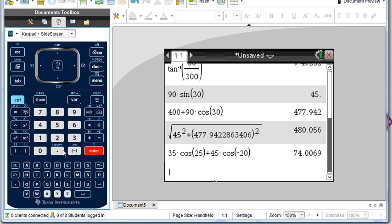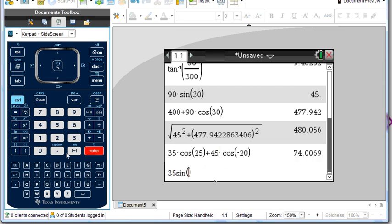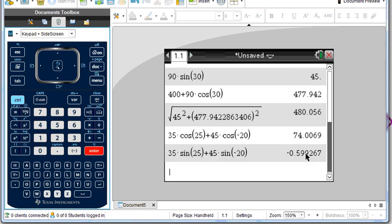And our y component is going to be 35 sine of 25 degrees plus 45 sine of negative 20 degrees. And we get a very small amount, about negative 0.6.